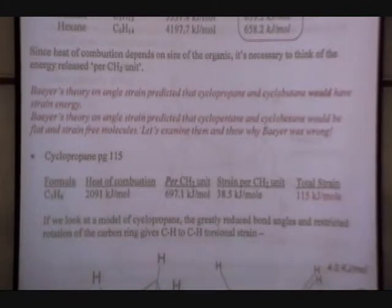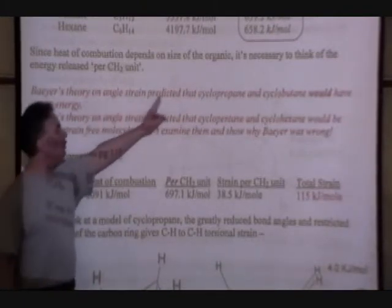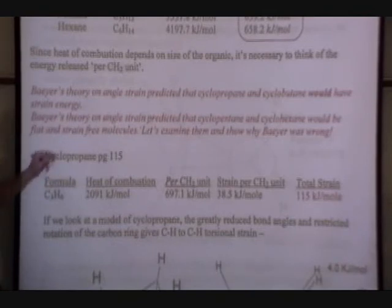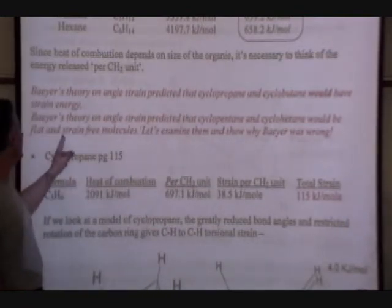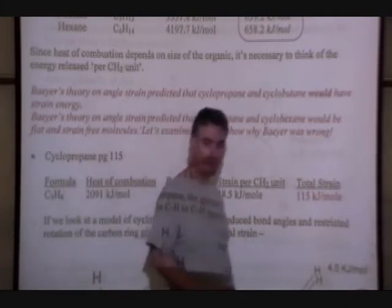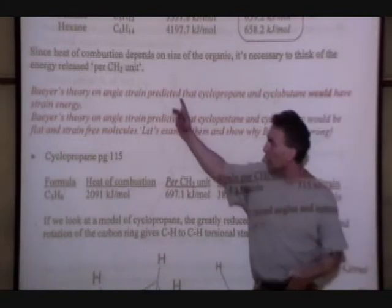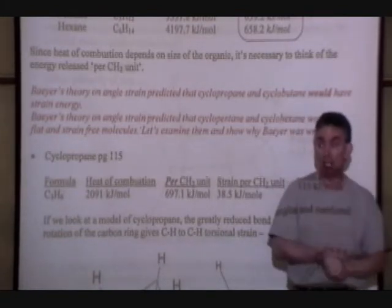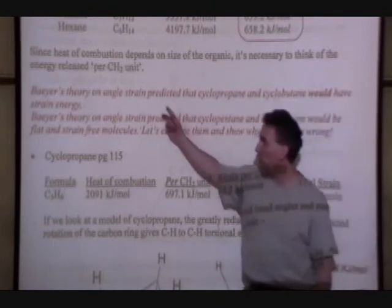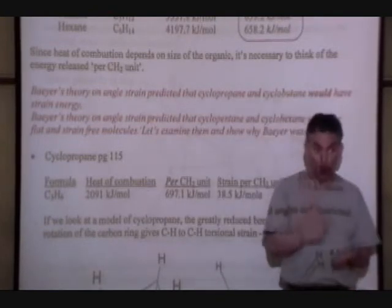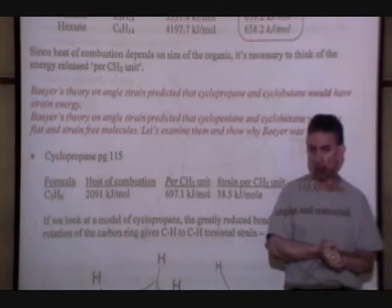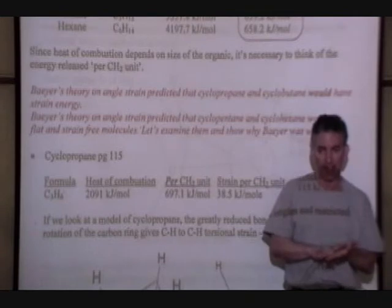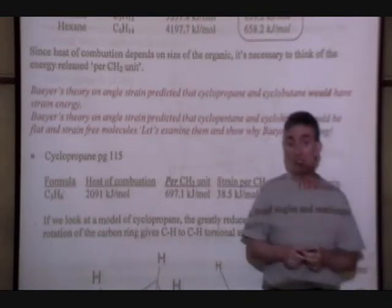Now one thing to mention now is that, before we look at these examples, Bayer's theory on angle strain predicted that cyclopropane and cyclobutane would have strain energy. Bayer's theory on angle strain predicted that cyclopentane and cyclohexane would be flat and strain-free molecules. So the first one is the general idea that for smaller sized cycles, there should be smaller bond angles and greater strain. So he's saying that molecules with a 3 carbon ring and 4 carbon would have angle strain, that 5 and 6 being close to that perfect 109.4 degree angle, he predicted that 5 carbon and 6 carbon rings would be strain-free. So let's take a look and see if he was right.